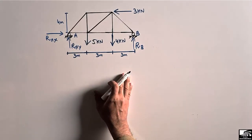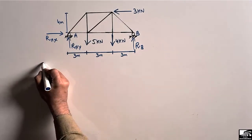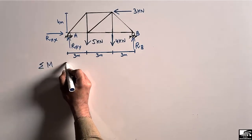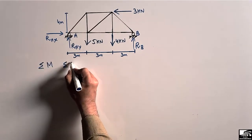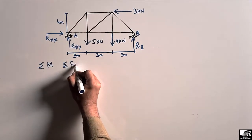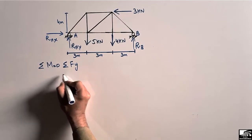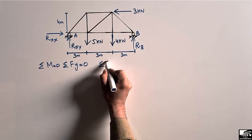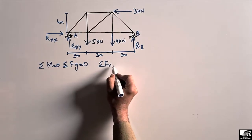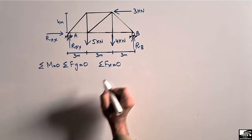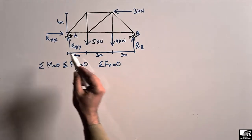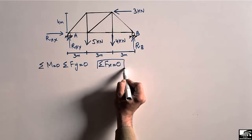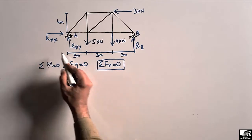To find R_AX, R_AY, and R_B, we will use the three equilibrium equations: summation of moments equal to zero, summation of vertical forces equal to zero, and summation of horizontal forces equal to zero. For the horizontal reaction, we use the horizontal force equation.